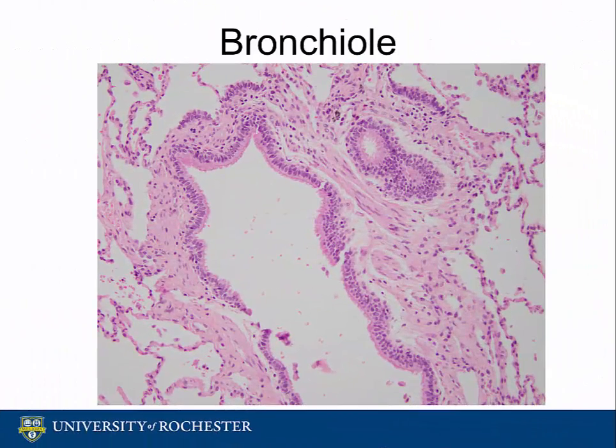The next image depicts a bronchiole. The bronchioles are less than 1 cm in diameter and make up the extensive distal dichotomous branching architecture of the lung. There is no cartilage associated with the bronchiole, only smooth muscle.